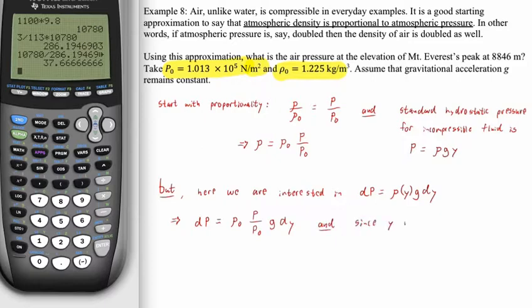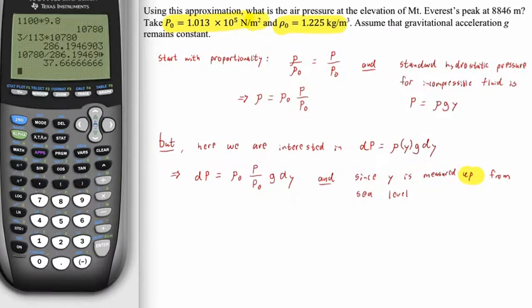Our differential of pressure is going to be some initial density times the changing pressure over the initial pressure at sea level, and then dy. Furthermore, since y is measured up from sea level, pressure must decrease as we gain elevation. So dP equals negative rho naught p over p naught g dy.